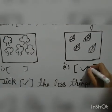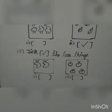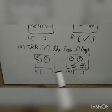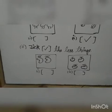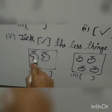Now the next question is, tick the less things. In which box there are less fruits? In which box, in the first box or in the second box? So count, 1, 2. There are 2 mangoes in this box.